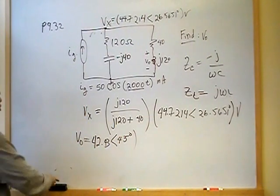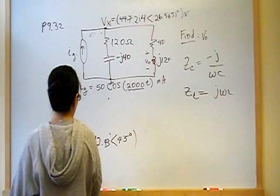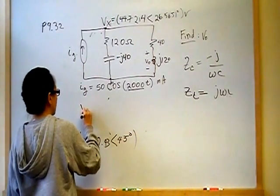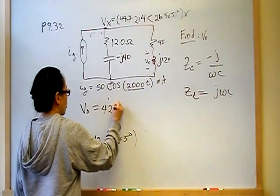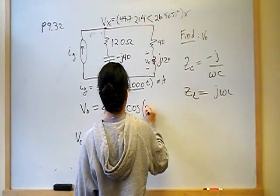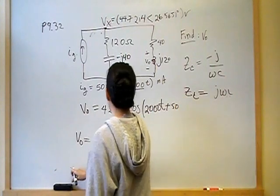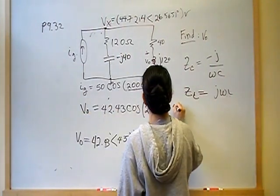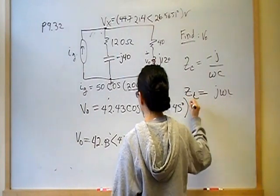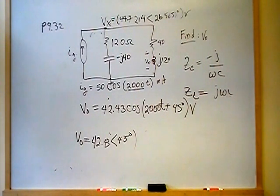We don't leave the answer in phasor form — we translate it back to cosines. The magnitude is 42.43 and the phase angle is 45 degrees, so V_out equals 42.43 cosine of (2000T plus 45) degrees volts. That's the answer to problem 32. Make sure to like the Facebook page below, and if you can, please do a response video and solve it using current division — that's my challenge. Thanks.